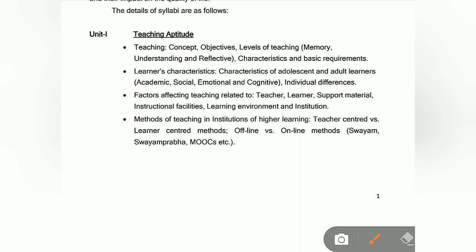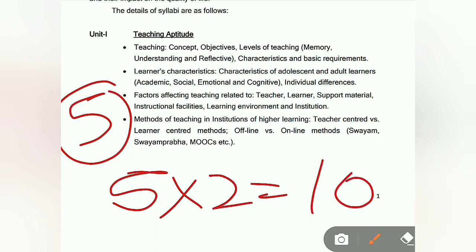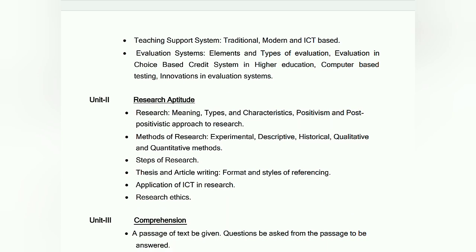Methods of teaching in institutions of higher learning, online and offline study modes are covered. There will be about 5 questions, each of 2 marks, so 10 marks are covered in this part. That is Part 1. Teaching support systems — traditional, modern, ICT-based — evaluation system, elements and types of evaluation, evaluation in choice-based credit system, and computer-based testing.